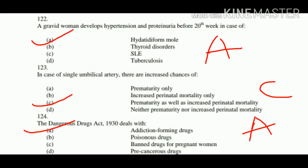Question number 122: A gravid woman developed hypertension and proteinuria before the 20th week in case of: A. Hydatidiform mole, B. Thyroid disorder, C. SLE, D. Tuberculosis. The right answer is A. Hydatidiform mole.